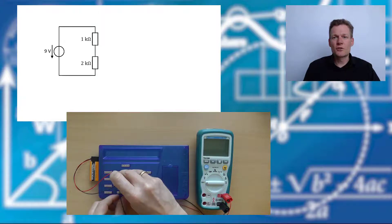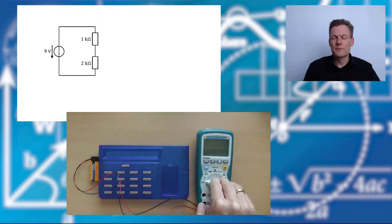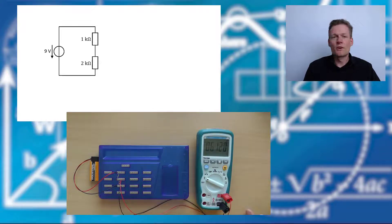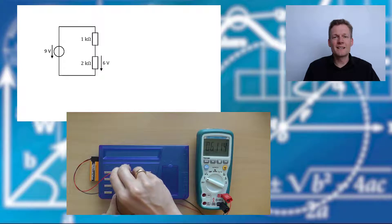And now, let's measure the voltage drops. Great! At the 2 kOhm resistor we have our needed 6 volts.